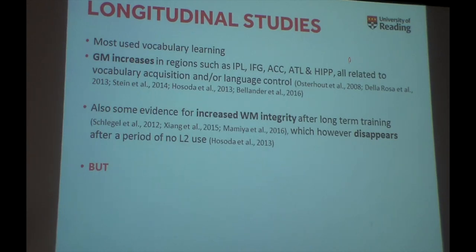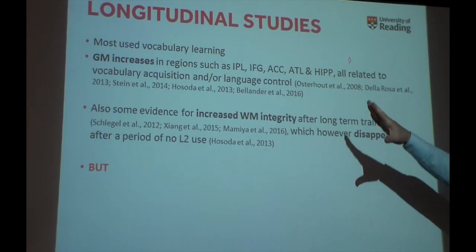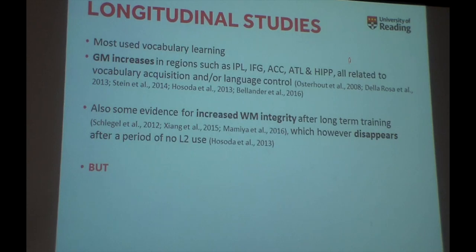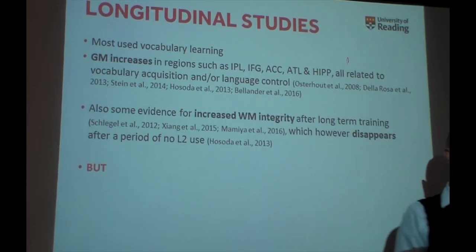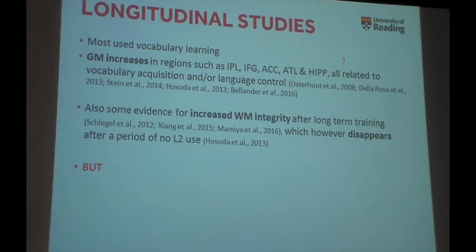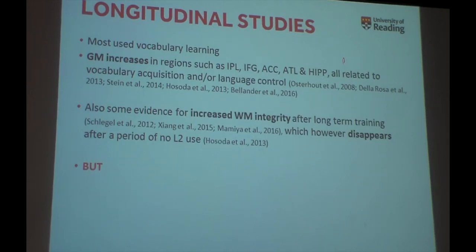Finishing with longitudinal studies: most of the studies we have have used vocabulary learning — in foreign language learning classes in several countries, including Japan. What they found after a period of training is gray matter increases in parietal, frontal, and cingulate regions. All these regions are related to vocabulary acquisition and also language control. There's also evidence for increased white matter integrity after very long periods of training. And the Hosoda study showed that if you stop your training and also stop using your L2 and come back in a year's time, any increases in white matter you had disappear — so you're back to baseline.